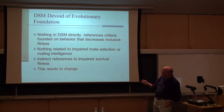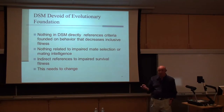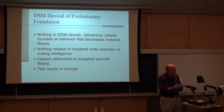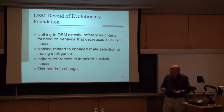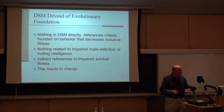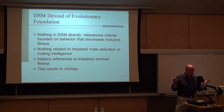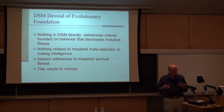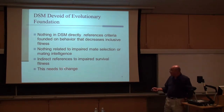But there's nothing in the DSM that directly references criteria founded on behavior that decreases inclusive fitness — nothing. It seems so simple to add things related to mate selection and mating intelligence. There are only indirect references to impaired survival fitness, like suicide. The issue is that it needs to change. That's just diagnosis — defining the problem.